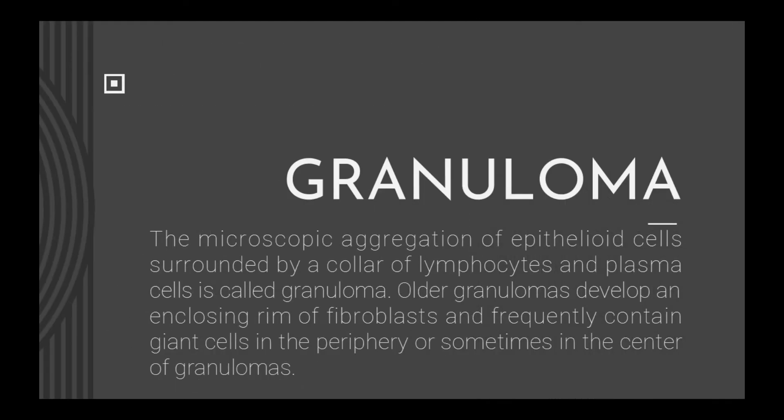Granuloma: the microscopic aggregation of epithelioid cells surrounded by a collar of lymphocytes and plasma cells is called a granuloma. Older granulomas develop an enclosing rim of fibroblasts and frequently contain giant cells in the periphery or sometimes in the center of granulomas.